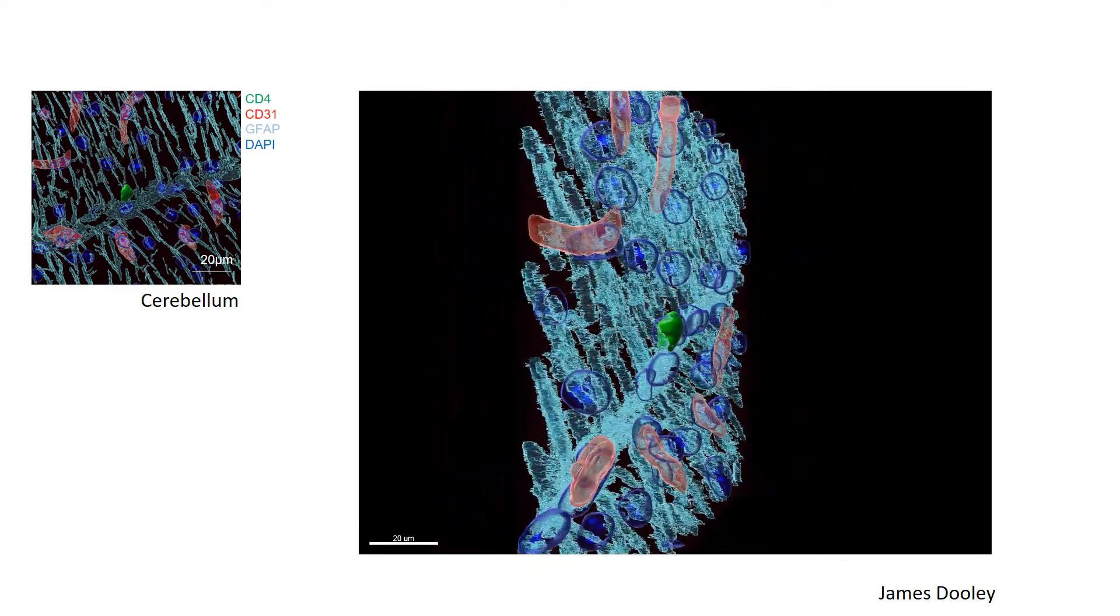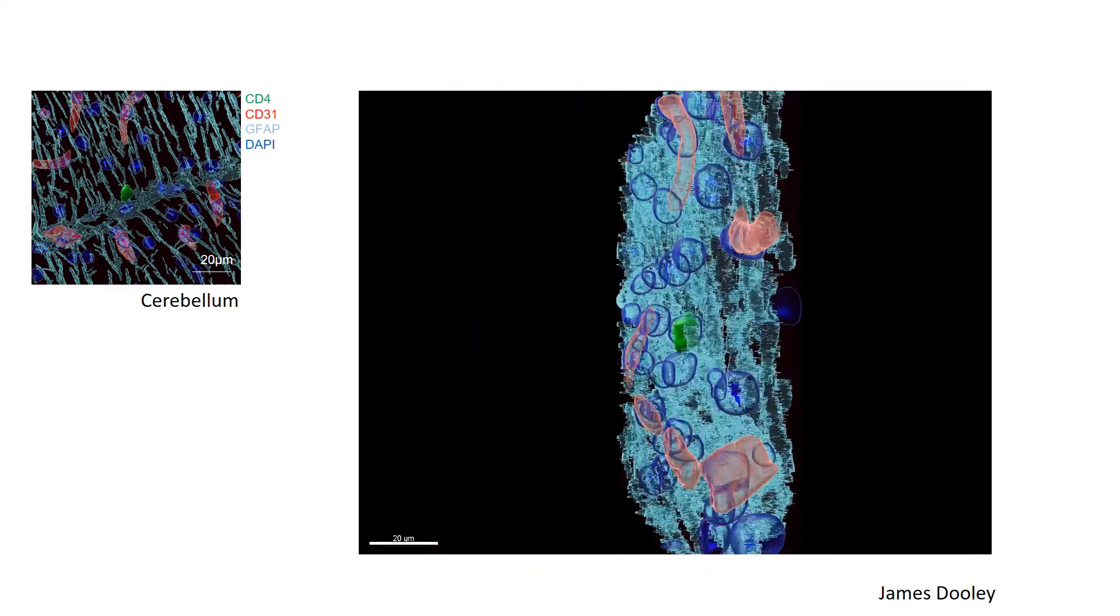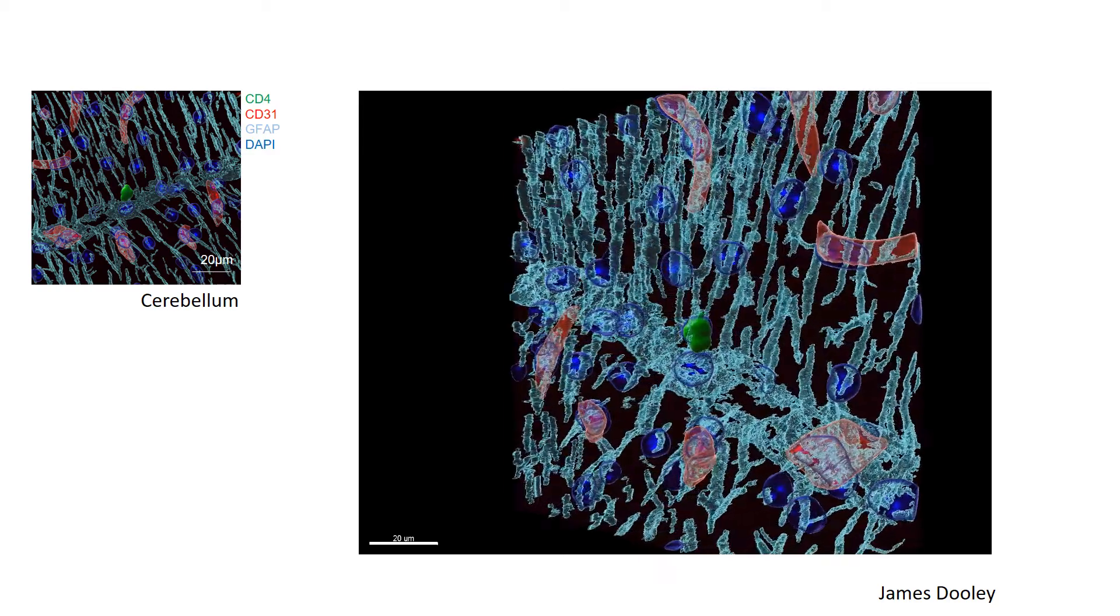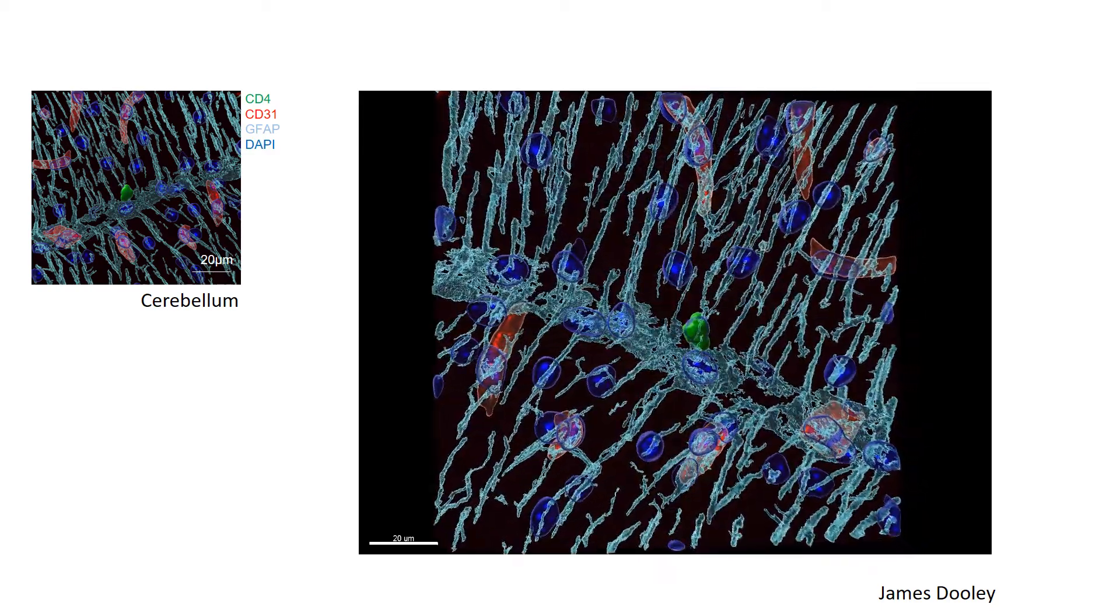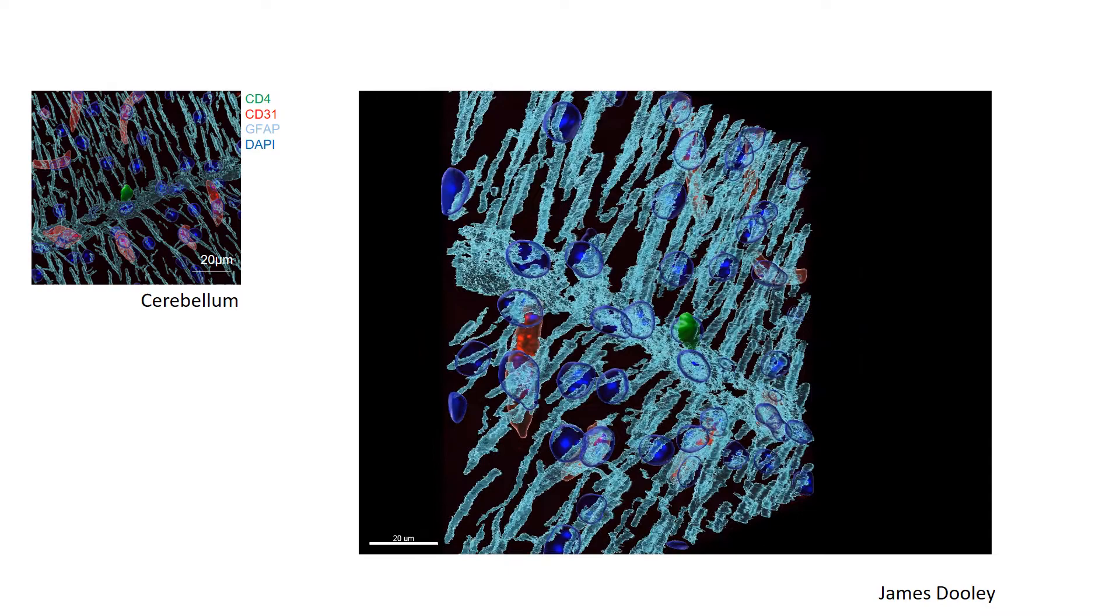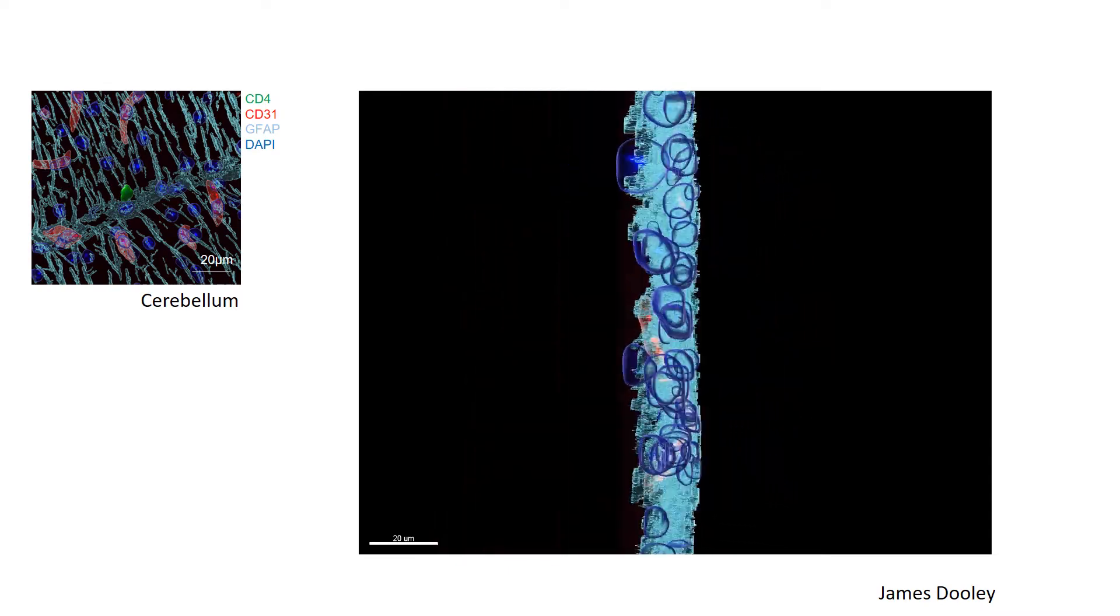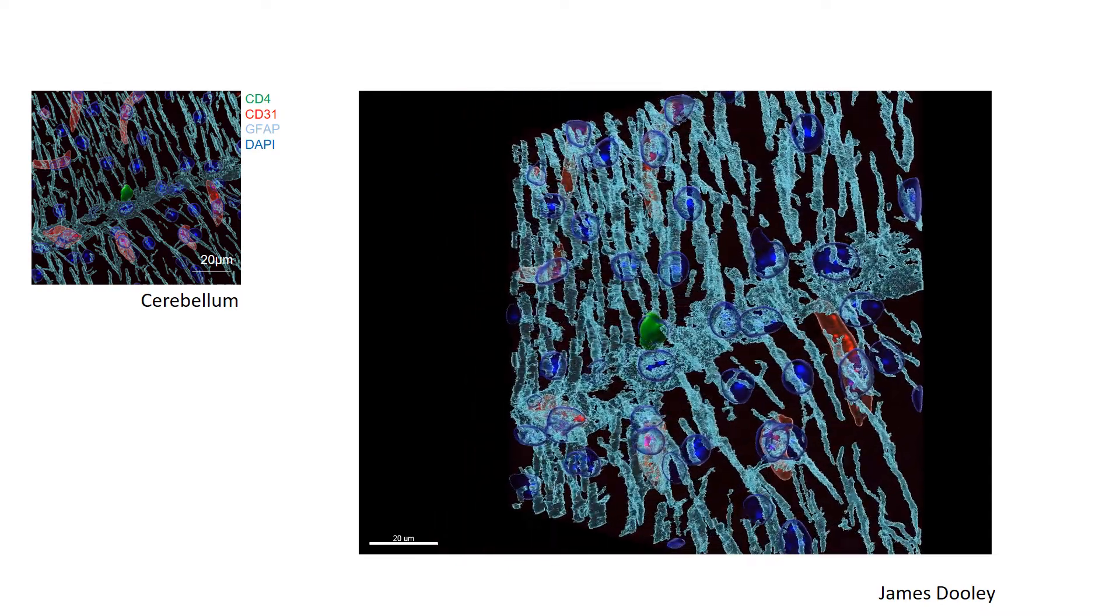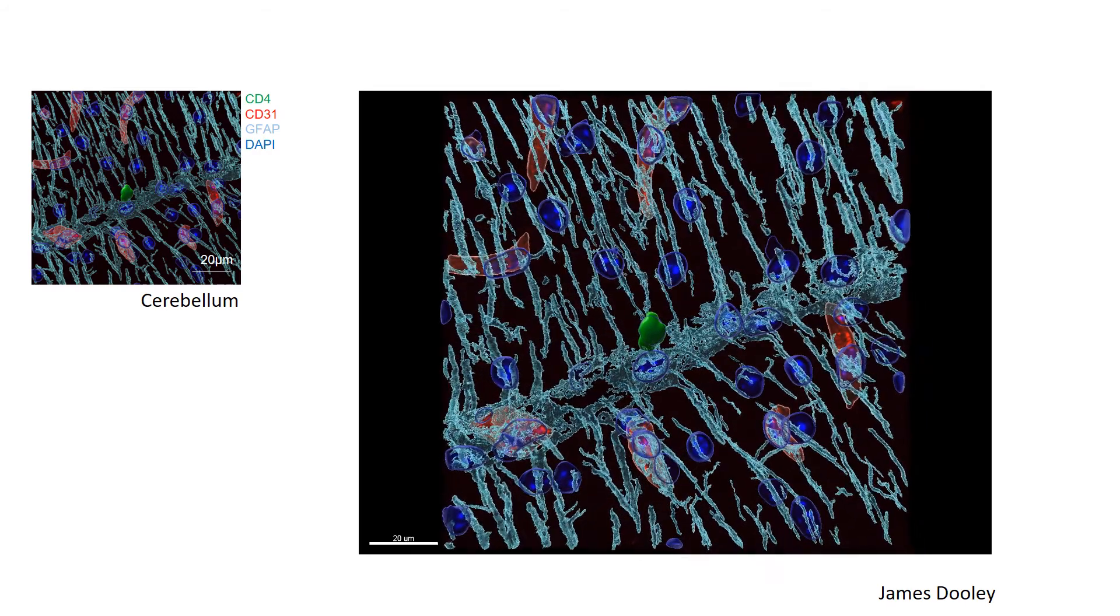Here we are showing a T-cell that is clearly inside the parenchyma of the brain. Again, we have used GFAP staining in aqua to highlight astrocytes and the glial limitans. The fact that this T-cell is beyond the glial limitans shows it is clearly beyond the blood-brain barrier and inside the parenchyma of the brain.